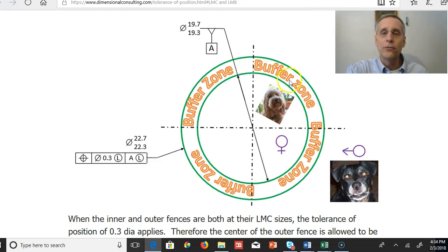We're going to do that with these two fences, and those are going to form a buffer zone, and the whole thing is going to be governed by this tolerance of position with the least material condition modifier and the least material boundary modifier.